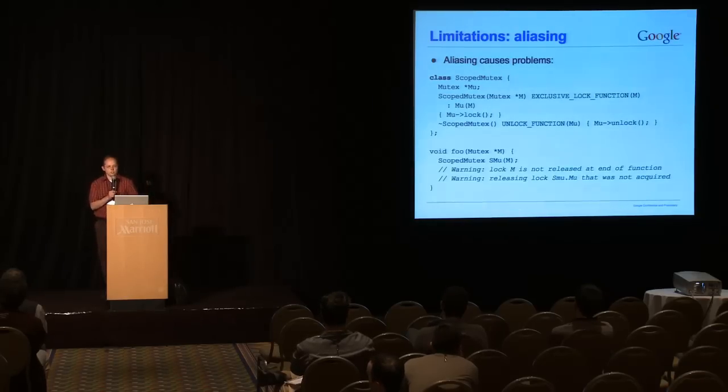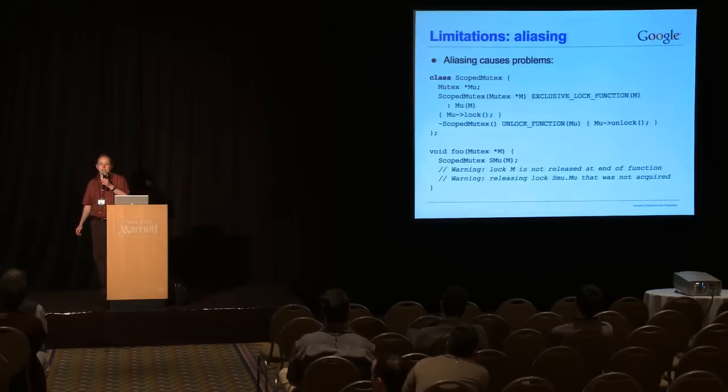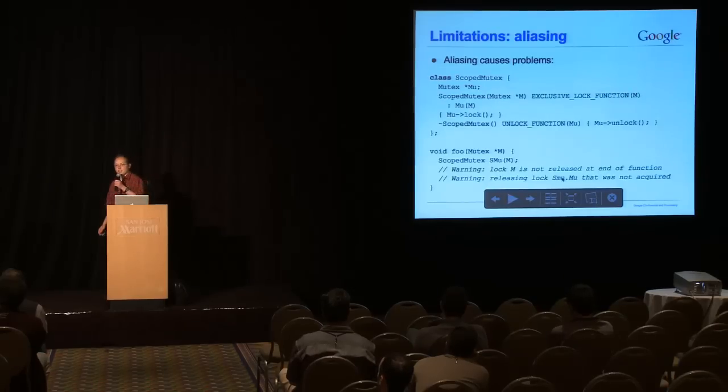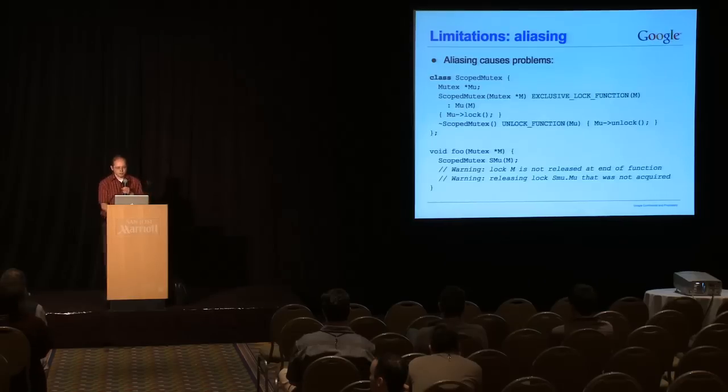Another big limitation, this is probably the most serious one, is aliasing. So let's say we want to define a scoped mutex class, one that uses implicit destructors to automatically unlock. You can't do it using the set of annotations I just described, because we do an exclusive lock on m, but then the unlock function is on mu, the data member of the class. These things are set to be equal to each other, but there is no way for the analysis to notice that, so you'll get these two bogus warnings if you attempt to implement this as is. We have a special hack with some additional annotations to deal with particular patterns like this, but it would be nice to have a slightly more sophisticated system that did not require those hacks.